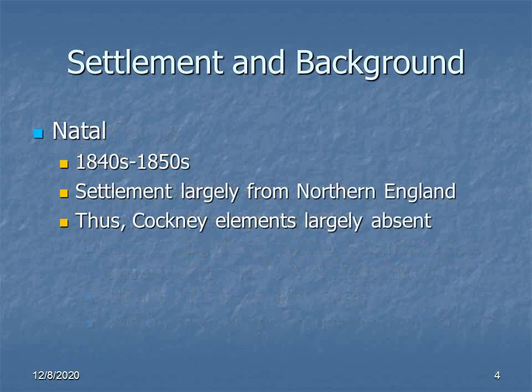Moving forward a few decades, during the 1840s and 1850s, settlement started at a new colony, the Natal, which is along the coast but to the north and east of the Cape. Settlement here was independent of settlement from the Cape and largely came out of northern England. So here as well, the Cockney elements are largely absent, and this also contributes to the lack of these elements in the general South African dialect.